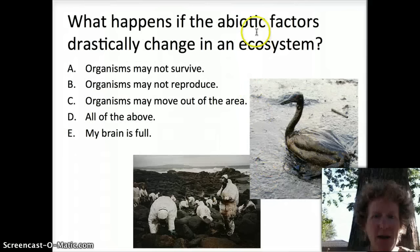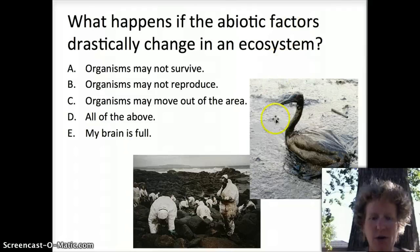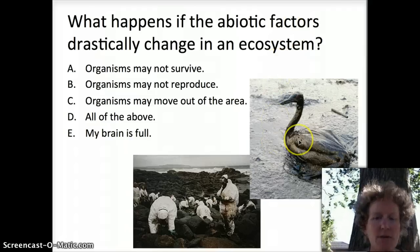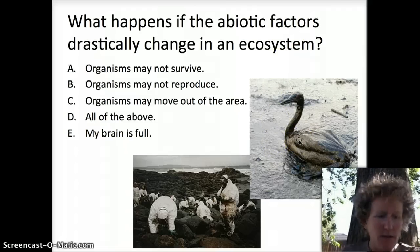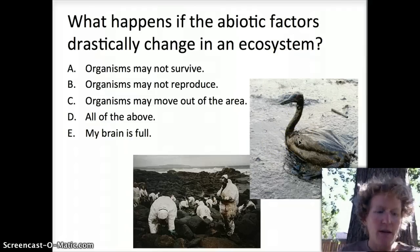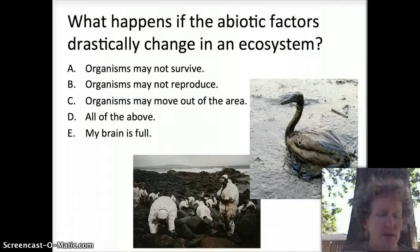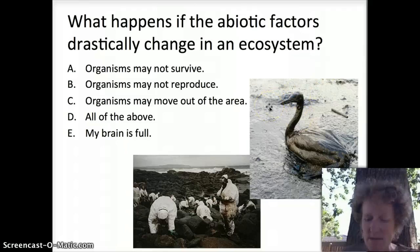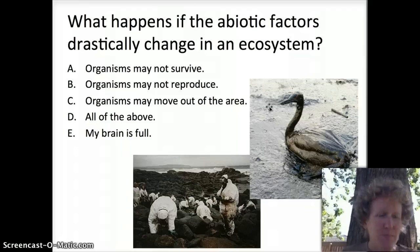If abiotic factors — the non-living factors in an ecosystem — change drastically, for example there's an oil spill, or climate change (which happens more slowly than an oil spill), organisms are going to respond to that change in their environment. How are they going to respond?